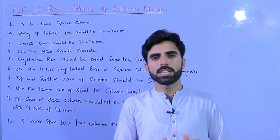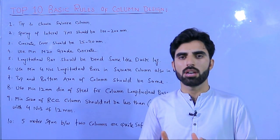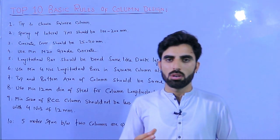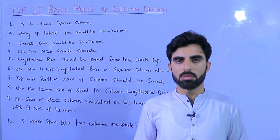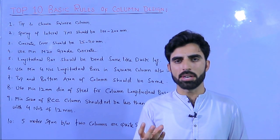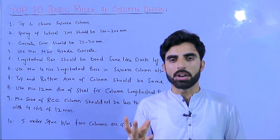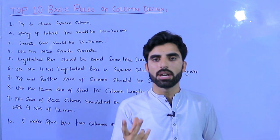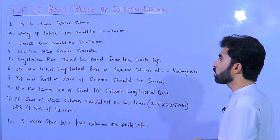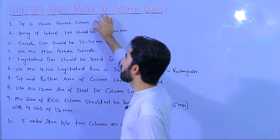The topic is top 10 basic rules of column design. We have different shapes of RCC columns — the main three types are square column, rectangular column, and circular column.